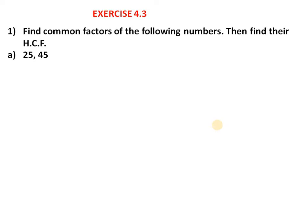The first question asks us to find common factors of 25 and 45, then find their HCF. First we will find the factors of 25. Checking: 1 multiplied by 25, then 5 — yes, 5 fives are 25. So the factors of 25 are 1, 5, and 25.